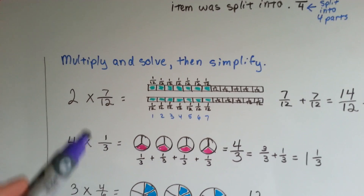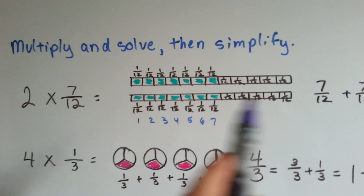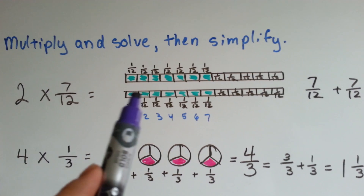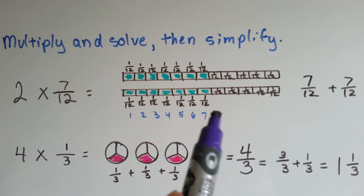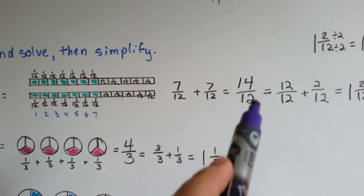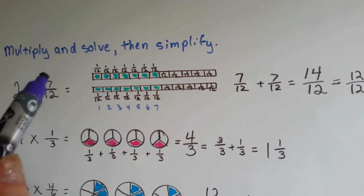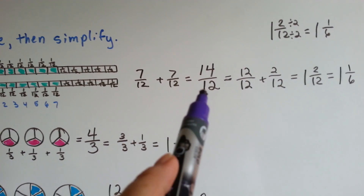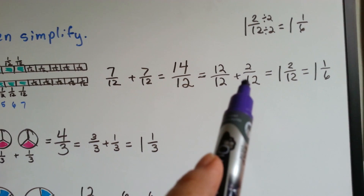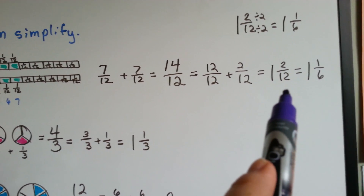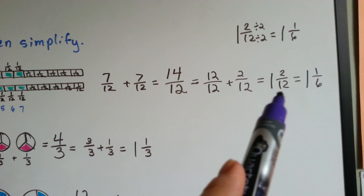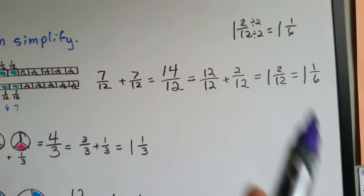Multiply and solve, then simplify. We have 2 times 7 twelfths. Here's a box of 12 twelfths and another box of 12 twelfths, with 7 highlighted in each. Counting gives 14 twelfths. We can add 7 twelfths plus 7 twelfths to get 14 twelfths, or multiply 2 times the numerator 7 to get 14 over 12. Either way, we have an improper fraction. 12 goes into 14 one time with 2 twelfths left over, giving 1 and 2 twelfths. Then we simplify: 2 divides into both 2 and 12, so 2 divided by 2 is 1 and 12 divided by 2 is 6, giving us 1 and 1 sixth.